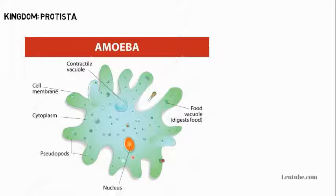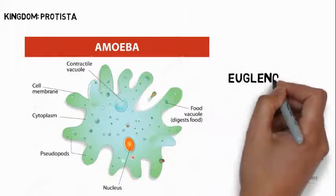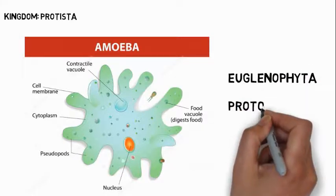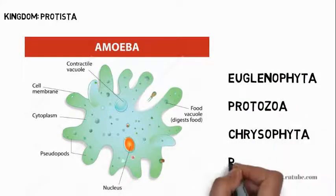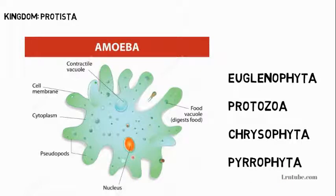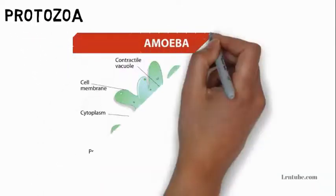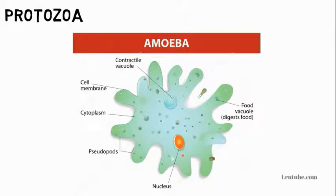There are four phyla in this kingdom: Euglenophyta, Protozoa, Chrysophyta, and Pyrrophyta. In this video, we will only cover Euglenophyta and Protozoa. Protozoa belong to the group called protists, and they are also microorganisms. All phyla in this group share the general characteristics of Kingdom Protista.